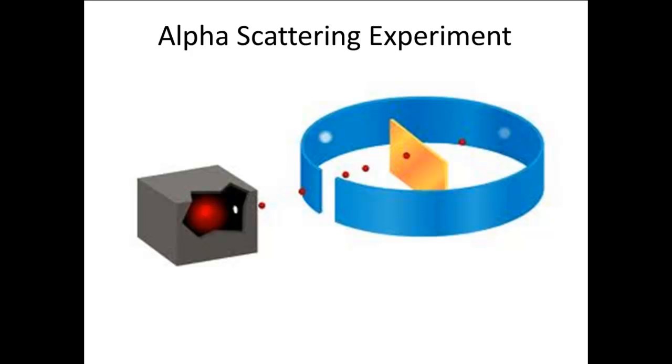The experiment, called the alpha scattering experiment or the gold foil experiment, consisted of a very thin piece of gold foil, chosen because it was a heavy atom with lots of protons and because you could make a really thin foil out of it.